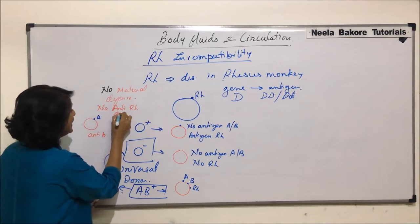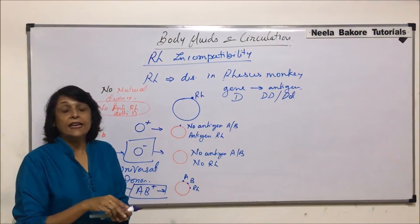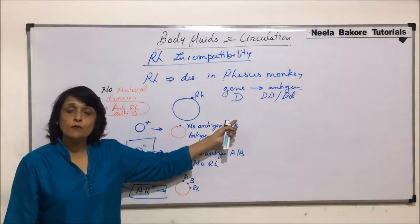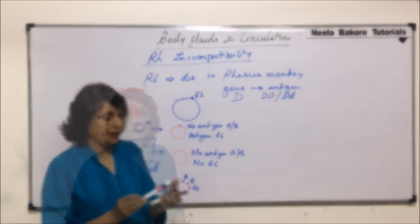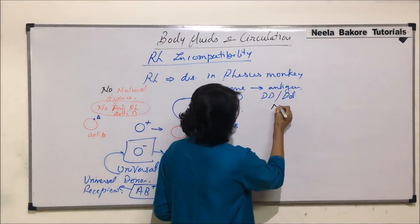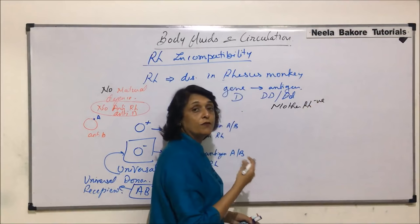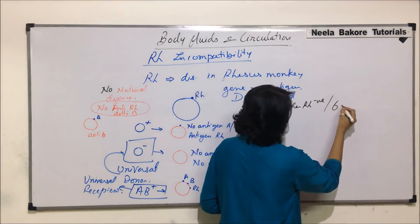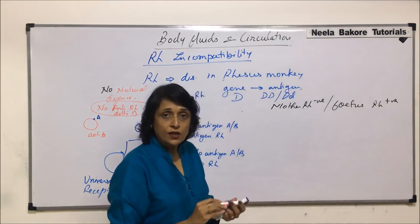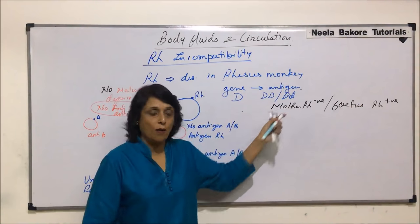Anti-RH is not present naturally. It can be developed later on under certain situations. That is what we are talking about with RH incompatibility. To understand this, we are taking a situation where the mother is RH negative and the fetus growing in her body is RH positive. We will take this same situation for two pregnancies in the same combination.